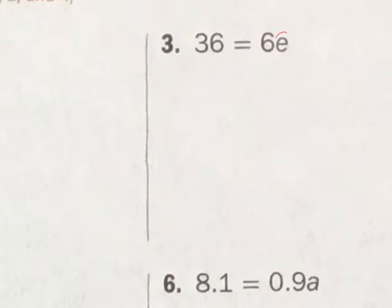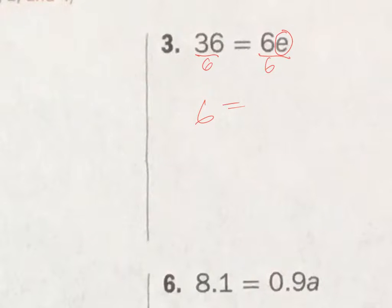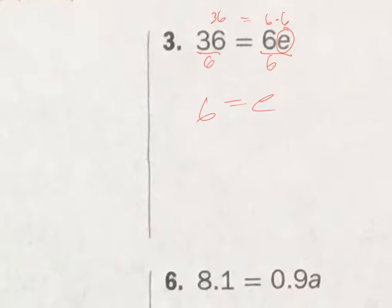Number 3. Circle my variable. It's being multiplied by 6, so I divide it by 6, and I've got to do both sides — divided by 6. So 36 divided by 6 is 6. And 6 divided by 6 is just 1, so it leaves me with e. Then I put 6 in here: 6 times 6 equals 36. It checks out. All good.